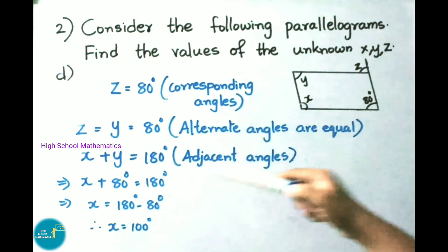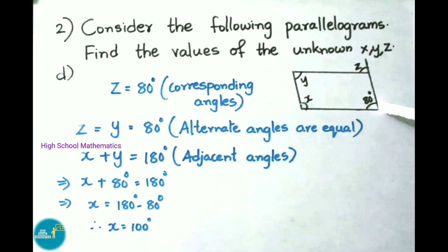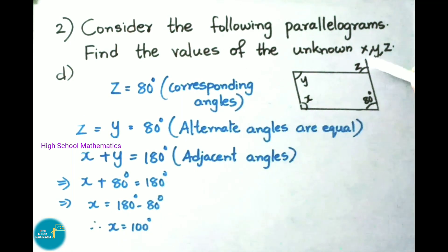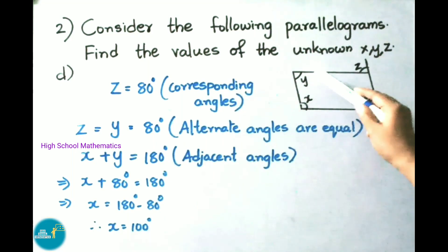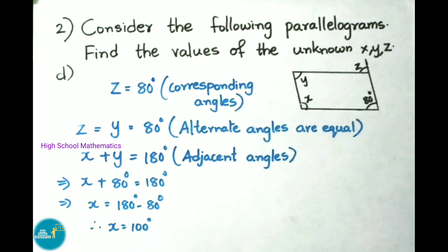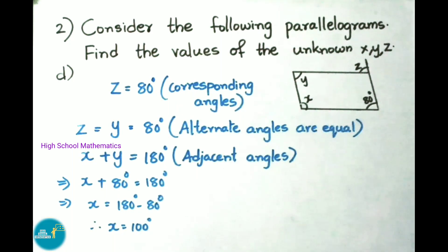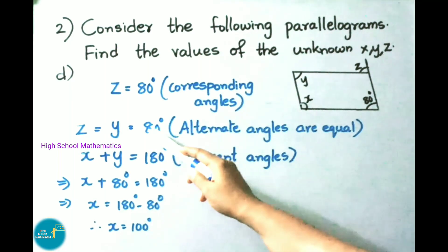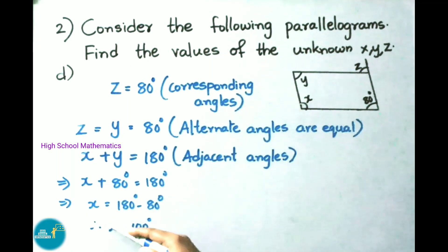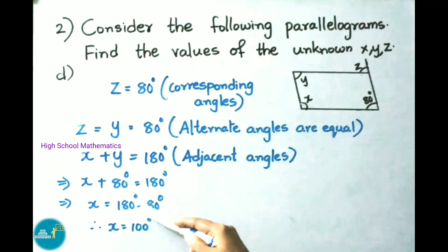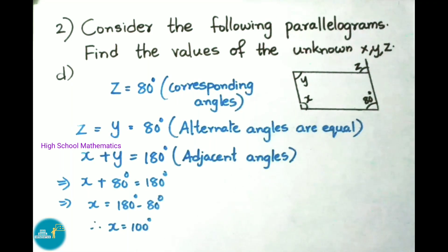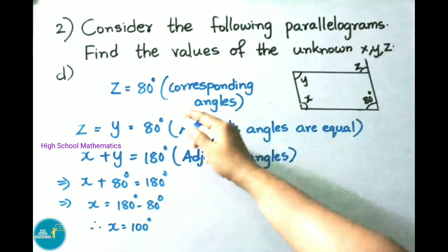Question D — observe this parallelogram with one angle given as 80°. We need to find X, Y and Z. Z equals 80° because these are corresponding angles. Z equals Y equals 80° because alternate angles are equal. X plus Y equals 180° because the sum of adjacent angles is 180°. Substituting Y as 80°: X plus 80 equals 180, so X equals 180 minus 80 equals 100°. Therefore X is 100°, Y is 80°, and Z is 80°.